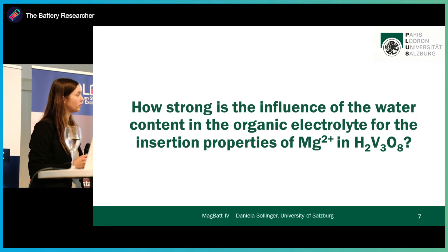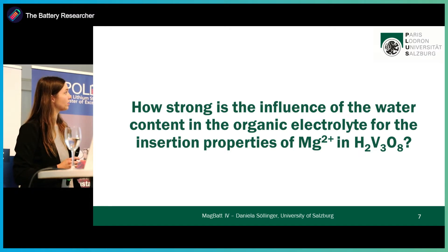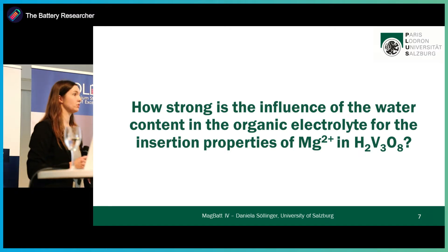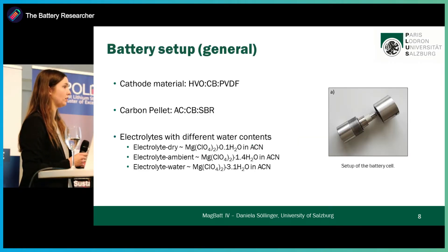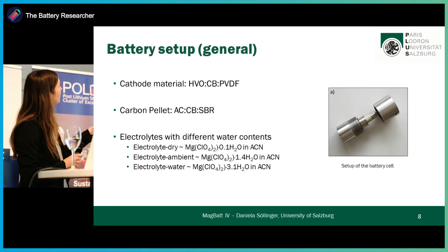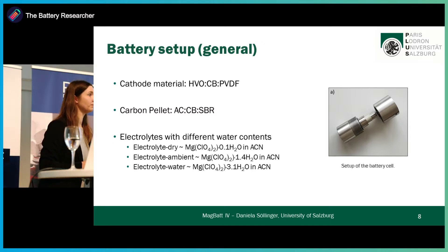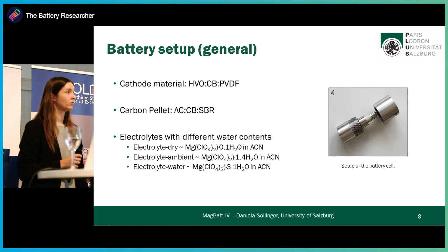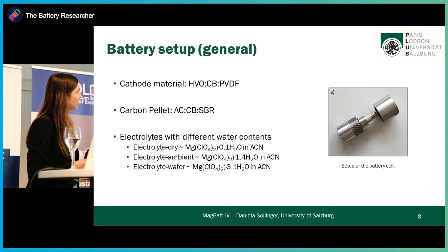In our research, we focus on exactly this question: to what extent the electrochemical and structural properties are changed by the insertion of Mg²⁺. Our setup is similar to previous publications. We use hydrated vanadium oxide as cathode material, a carbon pellet as counter electrode, a magnesium salt, and an organic electrolyte. To investigate the influence of water in the system, we use three different amounts of water. The setup of our batteries can be seen in this figure.